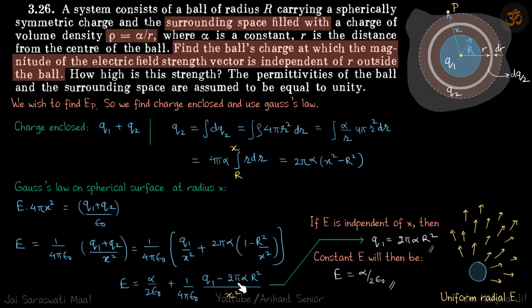You can see when that will happen. If the numerator becomes 0, then this electric field is independent of x. So q1 is equal to 2π α R². In that case, our condition is satisfied.